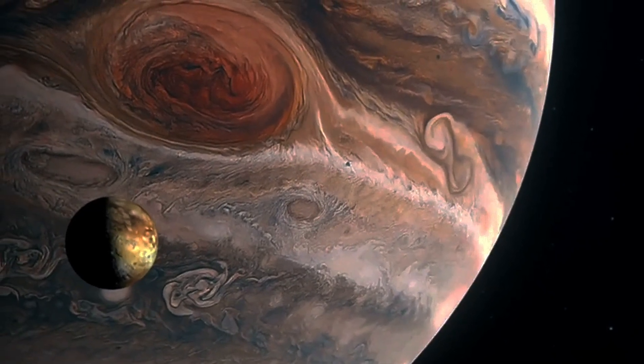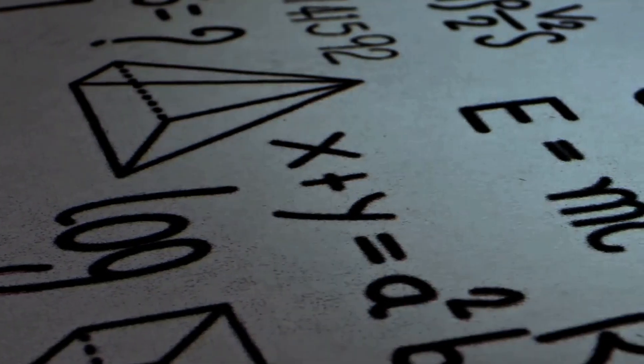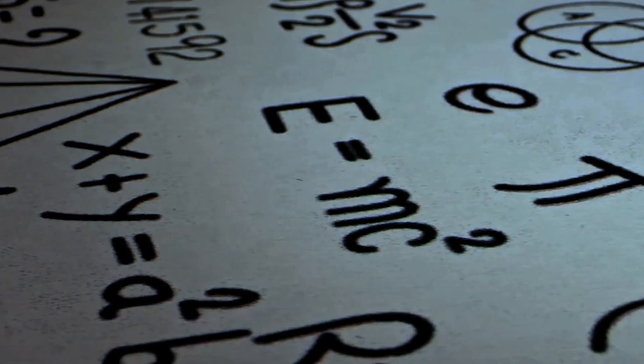Galileo discovered the moons of Jupiter, the phases of Venus, and the laws of motion that related an object's distance, velocity, acceleration, and the time elapsed to one another. The original version of relativity, Galilean relativity, is still taught in physics classes today.